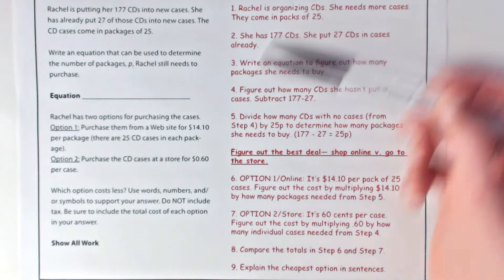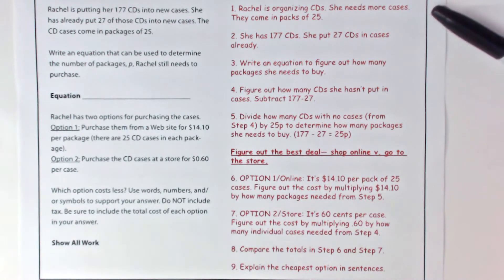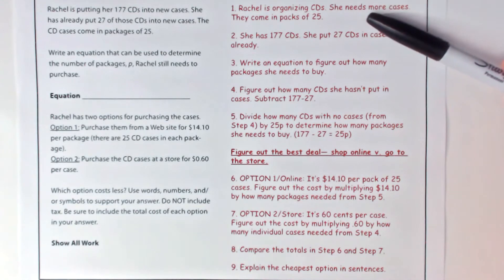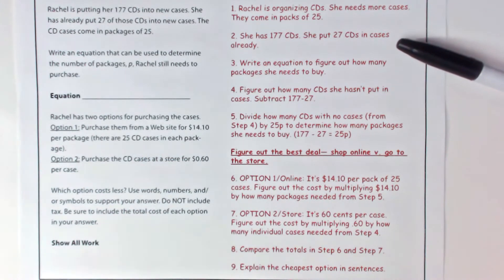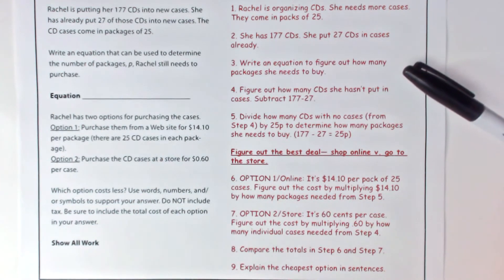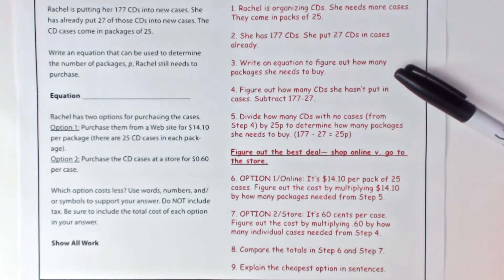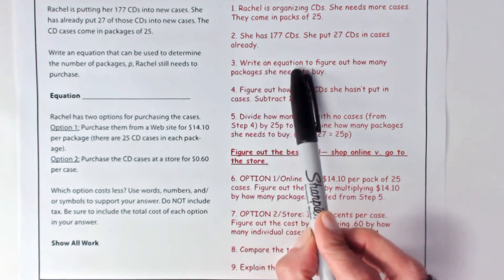So here's the thinking voice I used when reading this word problem. Step one: Rachel's organizing CDs — she needs more cases and they come in packs of 25. I'm just pulling details from the original text. Step two: she has 177 CDs and she's put 27 of those in cases already — again, those are details from the problem. Step three: write an equation to figure out how many packages she needs to buy. The 'write an equation' is exactly what I'm supposed to do, so I'm telling myself that.